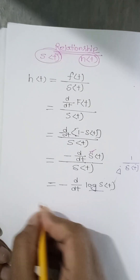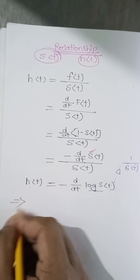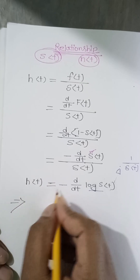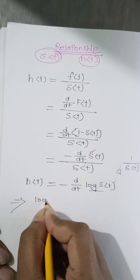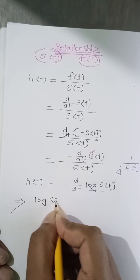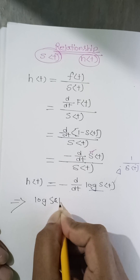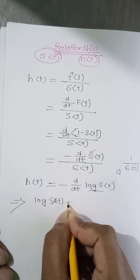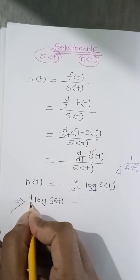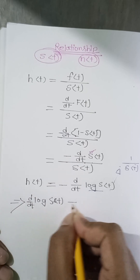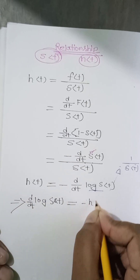This is actually h(t). Changing the sign, we can write: d/dt of log S(t) is equal to minus h(t).